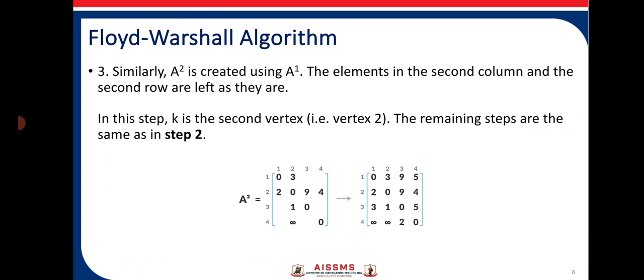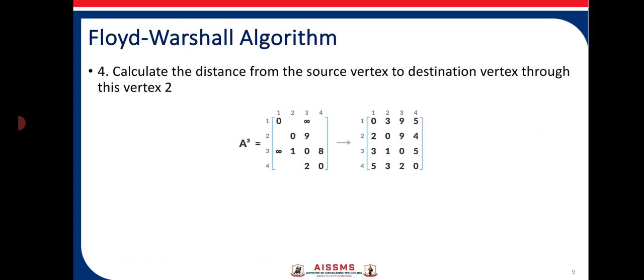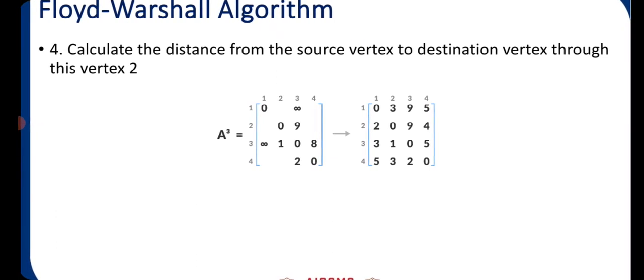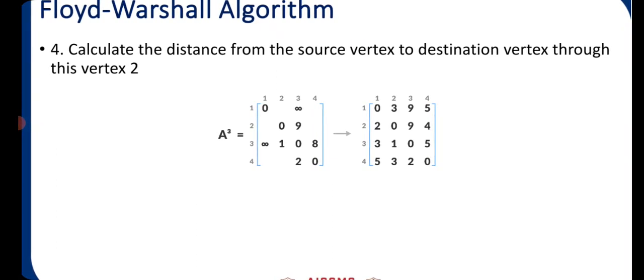Similarly, A2 is created by using the previously generated matrix A1. The elements in the second column and second row are left as they are. The remaining steps are the same: we fill cells by calculating the distance from source to destination vertex through vertex 2. Some values change because there is a path through vertex 2 — for example, from 4 to 1 we will be mentioning that as 5, and 4 to 2 as 3.